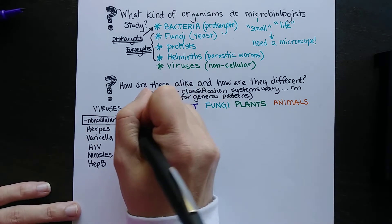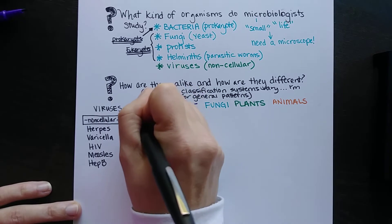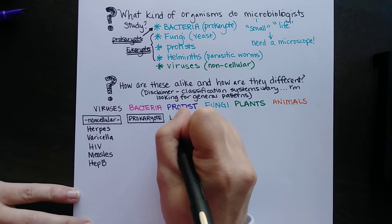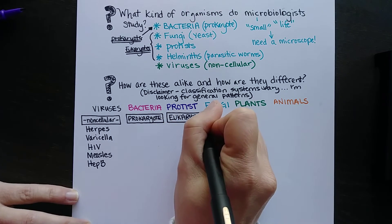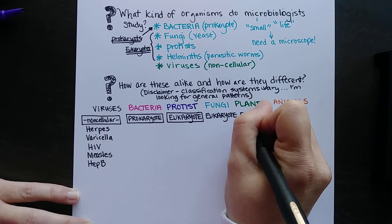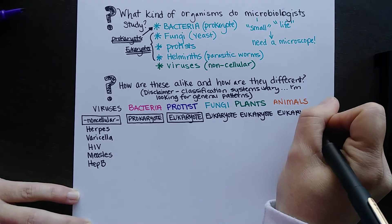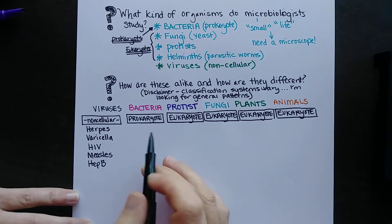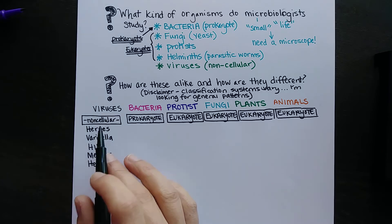Bacteria, remember, are prokaryotic. In my next video I'll review the differences between prokaryotes and eukaryotes. All the rest of the organisms are eukaryotes, which means whether they are one cell or multicellular, they are going to have a nucleus and organelles. That is the first big distinction — prokaryotes lack a nucleus, and viruses are different still because they are not considered cellular at all.